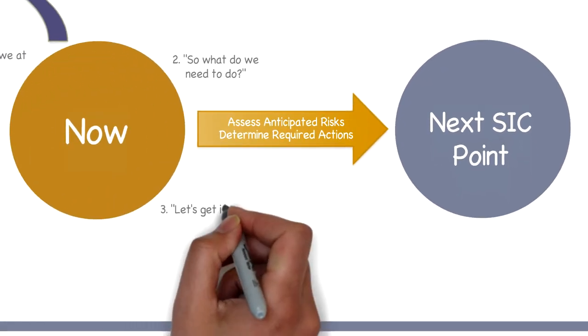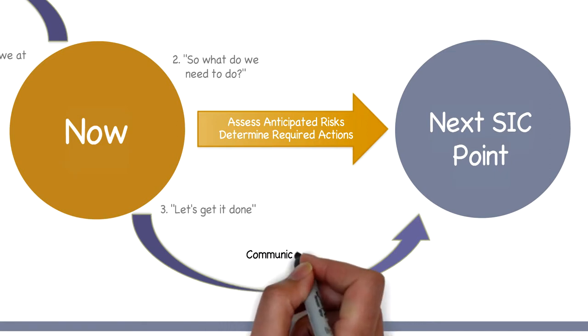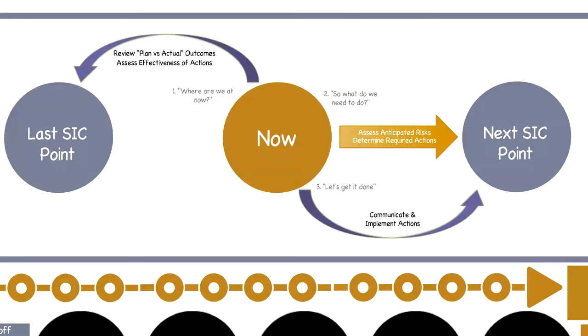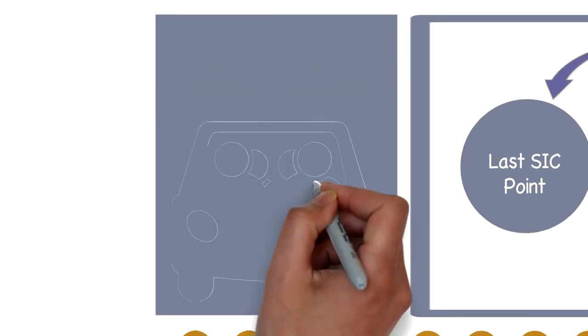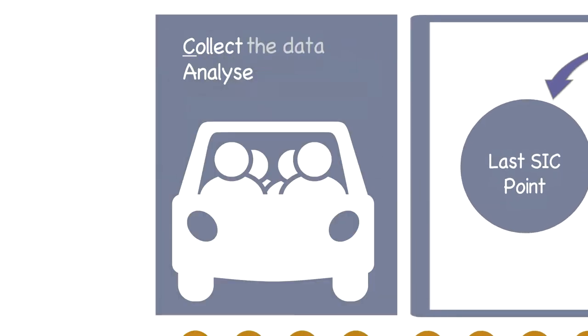This plan is then executed by communicating actions to the team and implementing them through to the next short interval control point where the process is repeated. In other words, collect the data, analyze the outcomes, respond accordingly.